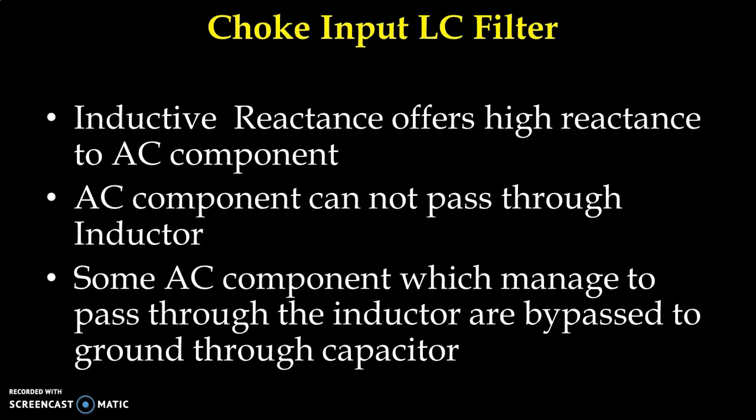Any AC components that manage to pass through the inductor are again bypassed to the ground through the capacitor. So here we have two stages: in the first stage, the inductor blocks AC components, and even if some AC components pass through the inductor, they are bypassed with the help of the capacitor. Ultimately at the load resistance, we get a pure DC component.